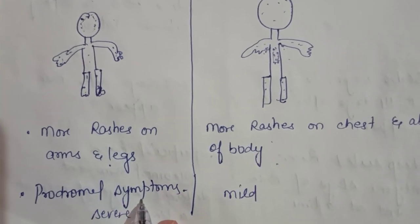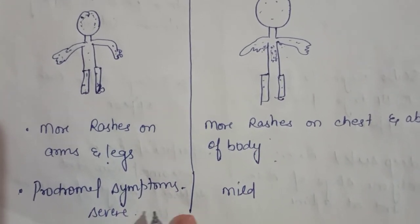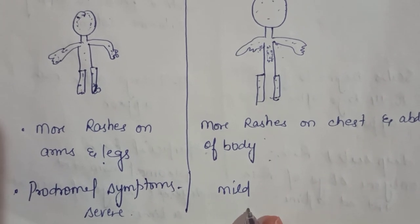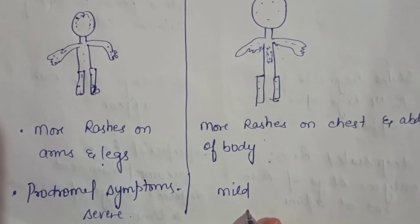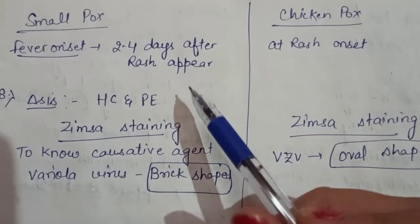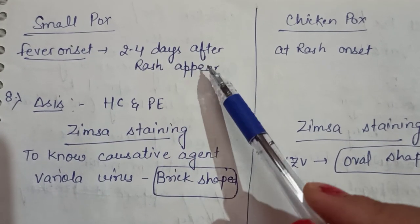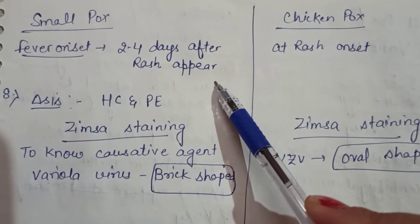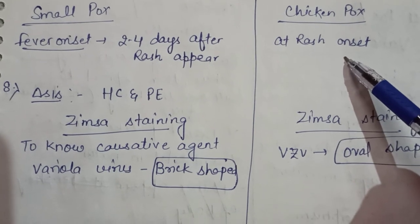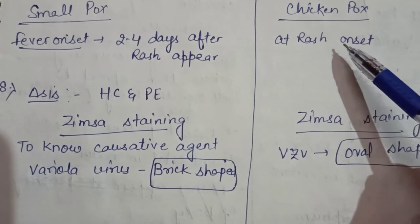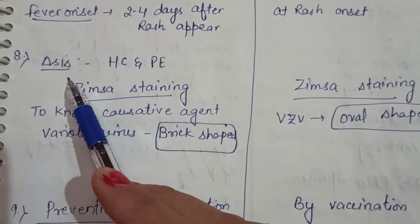The prodromal symptoms of smallpox are severe, whereas in chickenpox the prodromal symptoms are mild. The onset of fever in smallpox is 2 to 4 days before the rash appears, whereas in chickenpox the fever onset is concurrent with the rash appearing. Now, how do we diagnose?